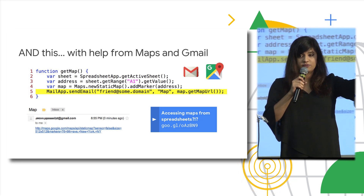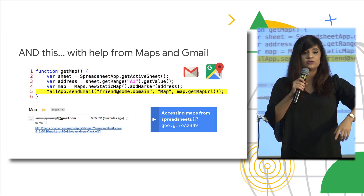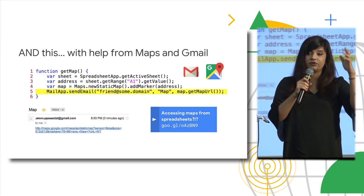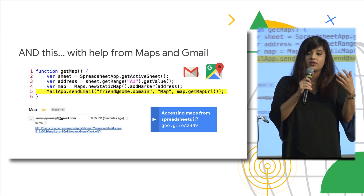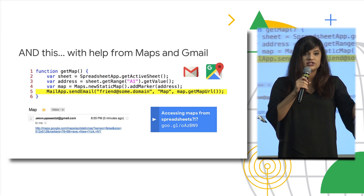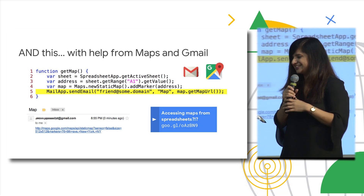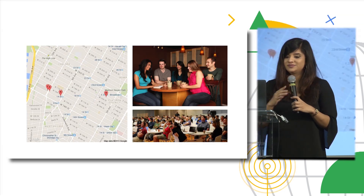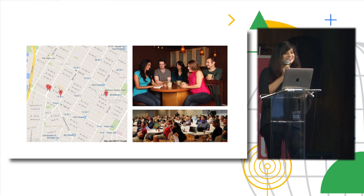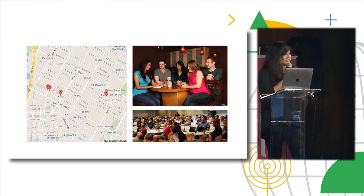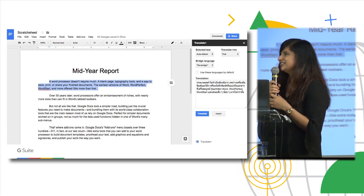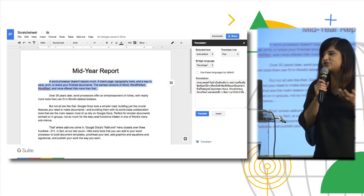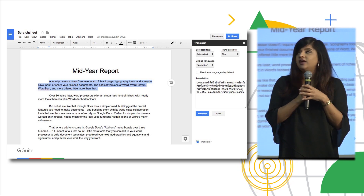I could have one column for everyone's email address and one column for their physical address, and email a custom set of directions to each person. I can confirm that is where my office is and it looks like those people in those images are having a good time, so that's great. Let's look at some other examples of Apps Script actually in your editors.